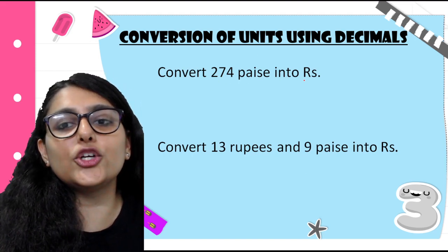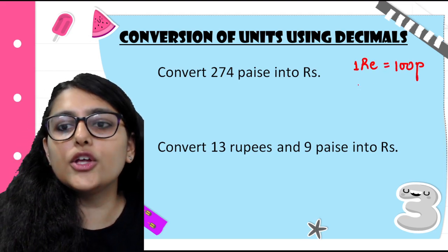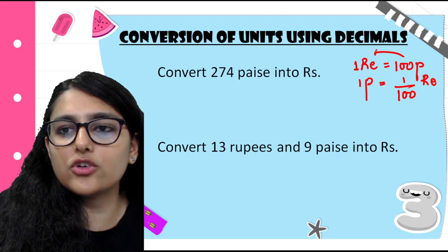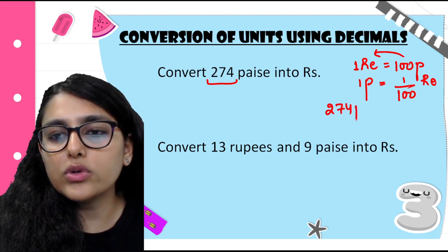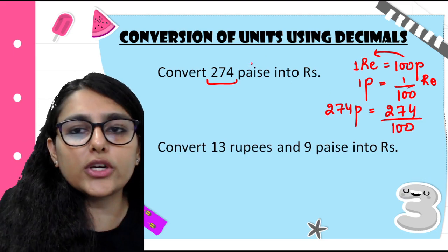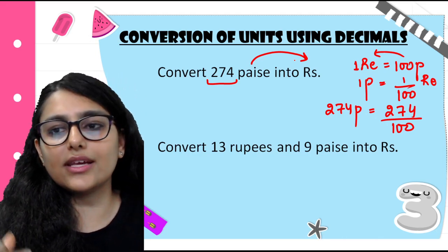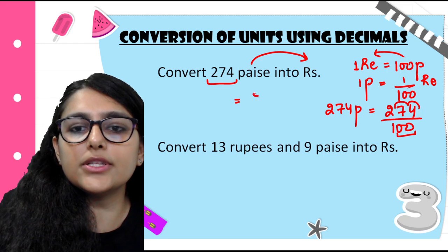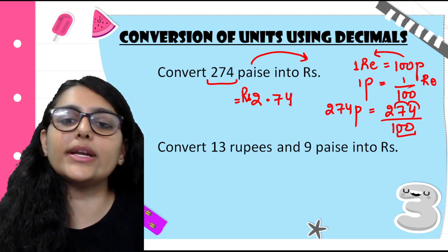Convert 274 paise into rupees. We know that 1 rupee is equal to 100 paise. So 1 paise will be 1 upon 100 rupees. So 274 paise will be equal to 274 upon 100. Whenever I convert a smaller unit into a bigger unit, I divide — divided by 100 in this case. Count the zeros and skip that many places: my answer is 2.74. So 274 paise into rupees is rupees 2.74.